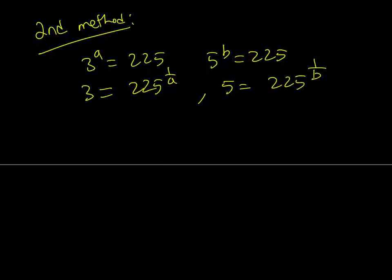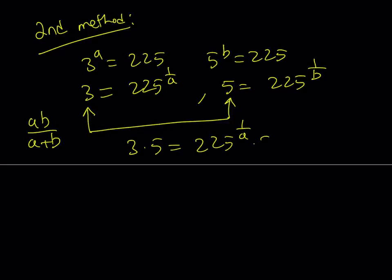Now, why did I do that? Because I would like to get my expression. Remember, my goal is to evaluate this. And this expression kind of reminds me that I can get the reciprocals and use them. You'll see in a little bit how. Now, 3 and 5 can be put together. Let's go ahead and multiply them. 3 times 5. And on the right-hand side, we get 225 to the power 1 over a and 225 to the power 1 over b. 3 times 5 is equal to 15.